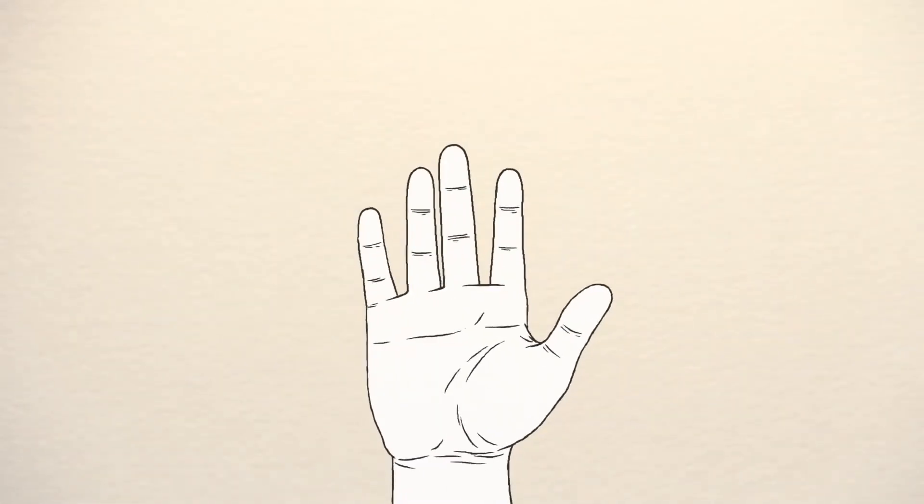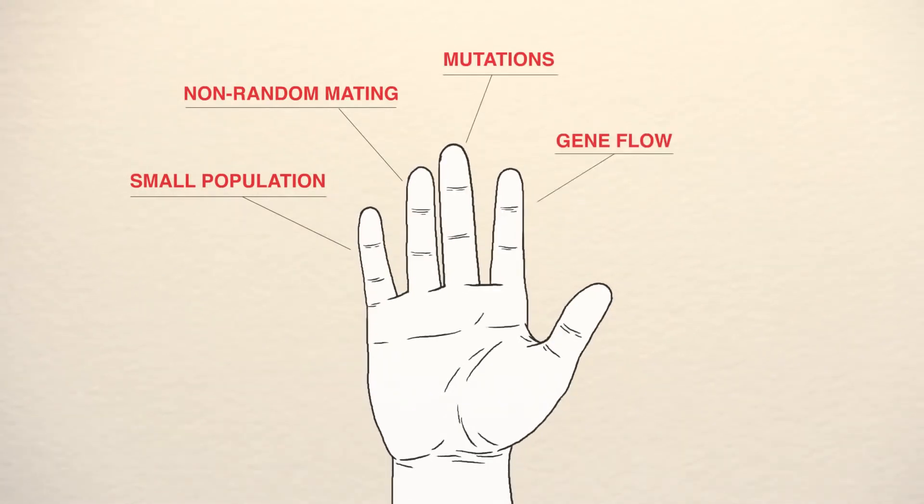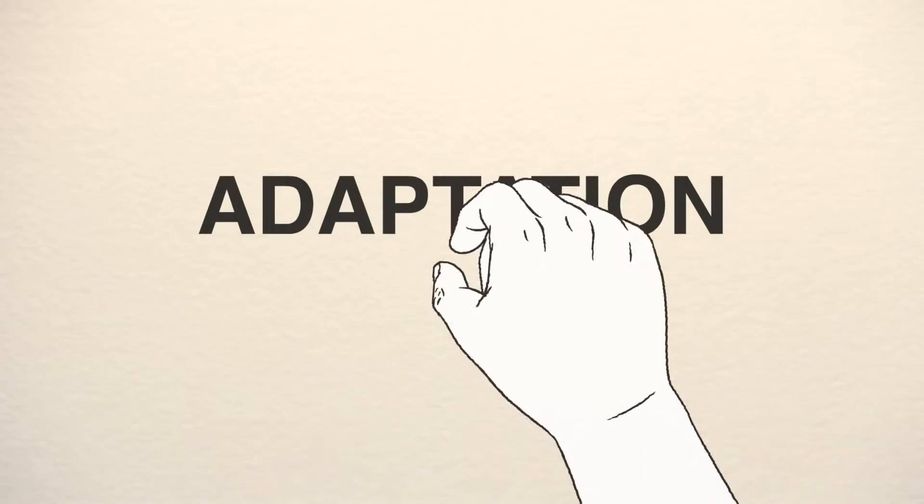All four of the processes represented by our fingers can cause evolution. Small population size, non-random mating, mutations, and gene flow. However, none of them lead to adaptation.